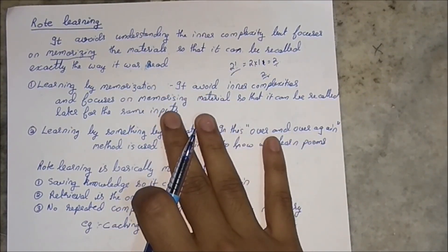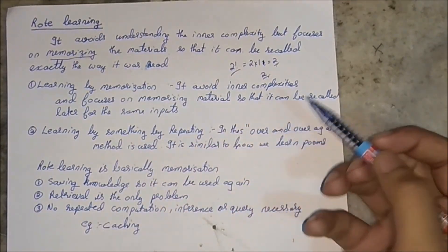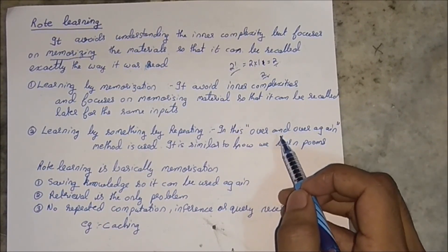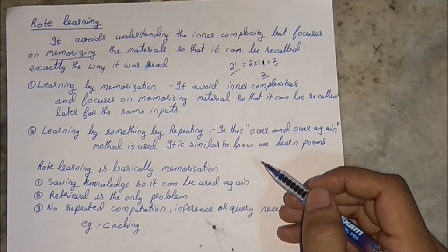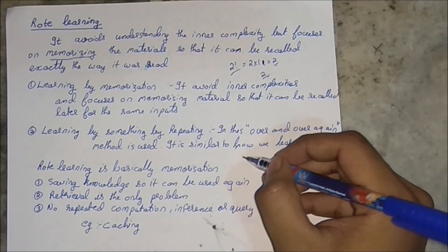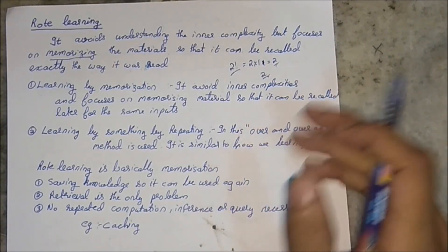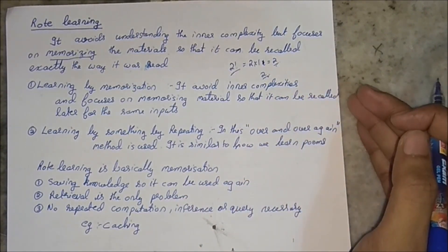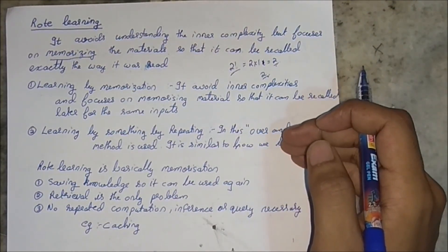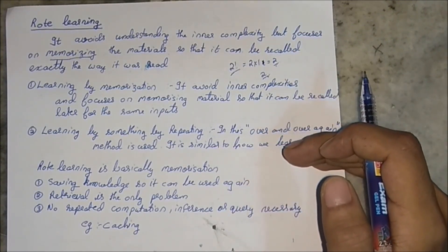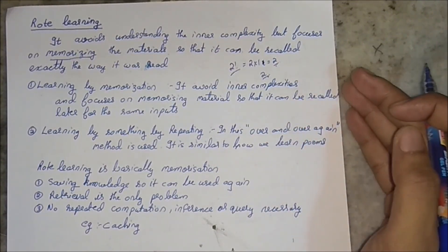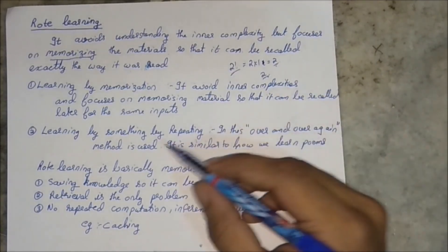Next is learning by repeating. In this method, something is done over and over again. For example, telling the computer to take input from the user again and again so it gets used to it. Next time, before being asked, it will just accept the input like a priority interrupt, and higher priority will be given to the one which is repeatedly performed.